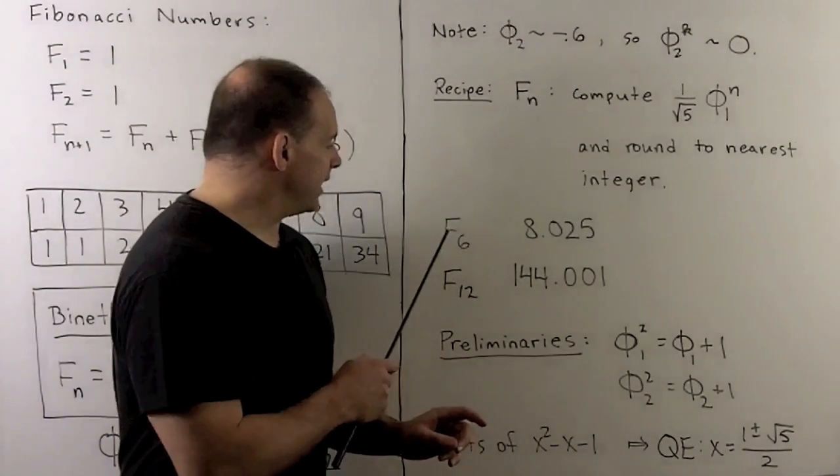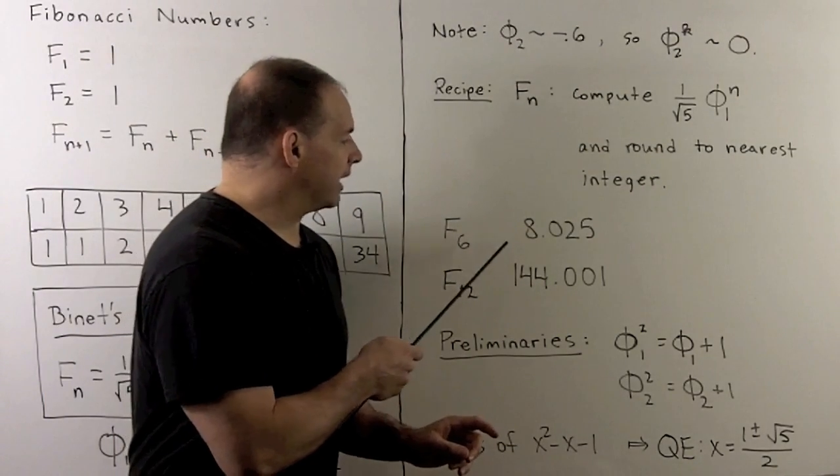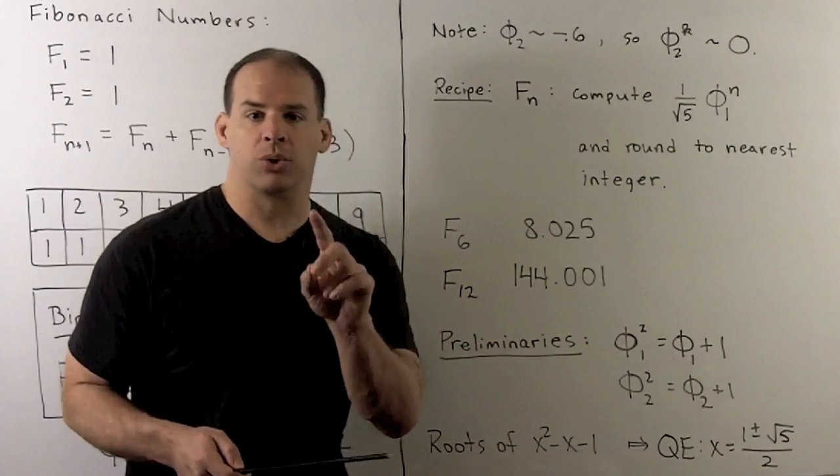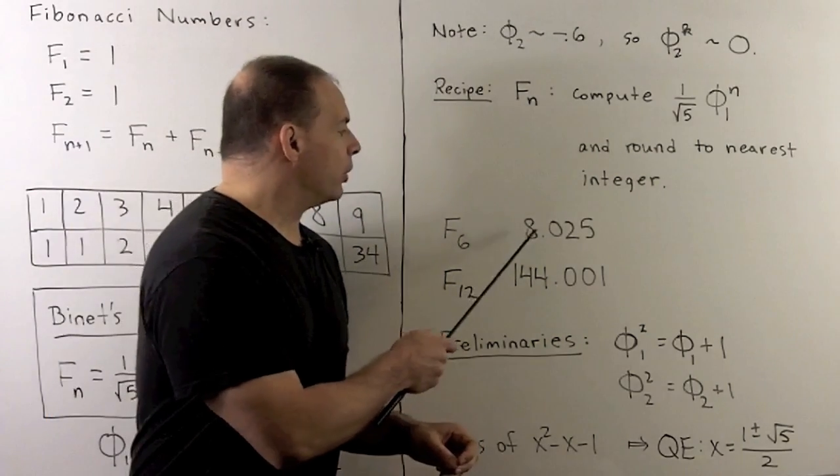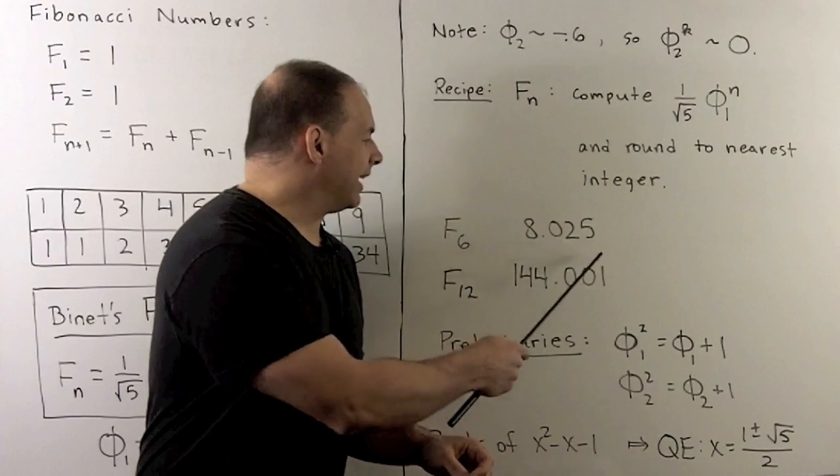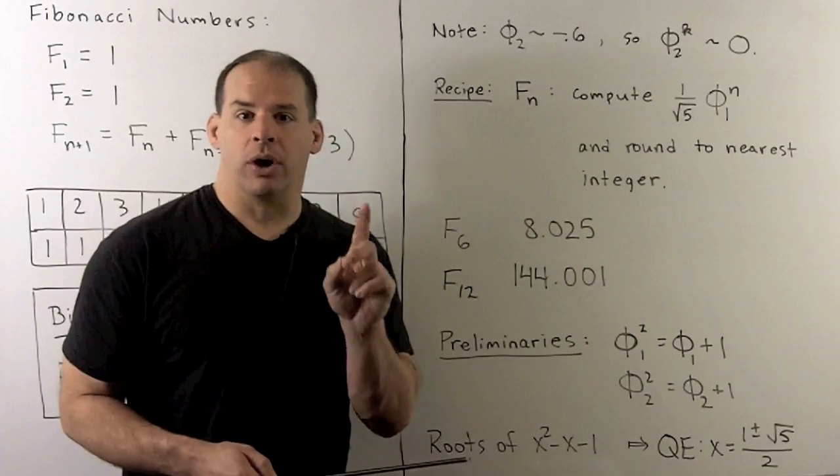So, for example, if I take F6, so I put that in a calculator, I'm going to take 1 over square root of 5, phi 1 to the 6th power. I get 8.025. If I round, I get an 8, and that agrees with what we know for F6.